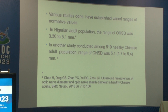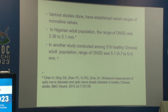Various studies have been conducted to establish normative ranges. In a Nigerian adult population, the ONSD range was approximately 3.6 to 5.1 mm. A study by Chen H. including 51 healthy Chinese subjects found an ONSD range of 4.7 to 5.4 mm.